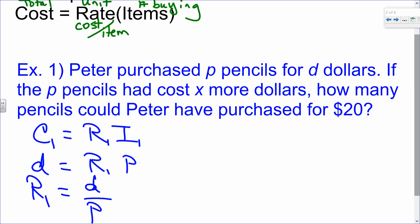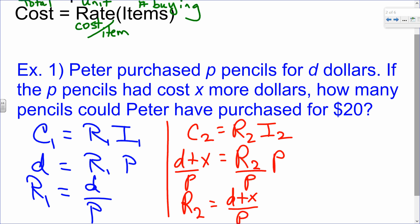We continue reading the problem. We've done plenty of these just with numbers where we then have a case two. Now, P pencils. So still the same number of pencils, right? So we can put a P right here. They are going to cost X more dollars. Is that more dollars per pencil or more dollars total, Kyle? Does that say more dollars per pencil? Does it say per pencil in there? So it's not a rate. So that's strictly the cost is now X more. So instead of D, it is now D plus X. And the rate is going to be the same.